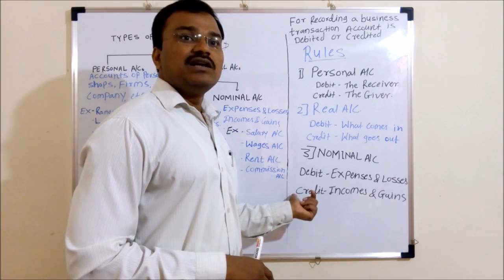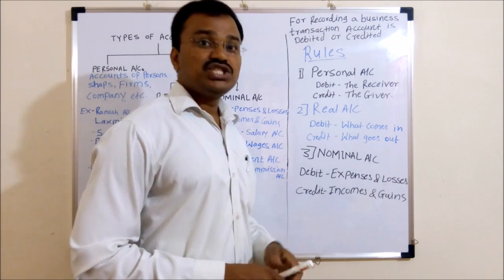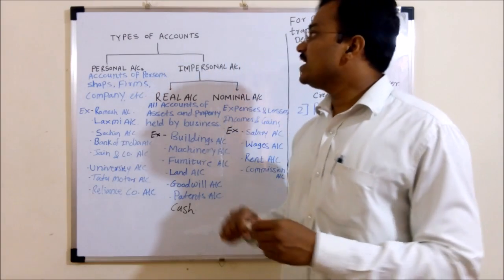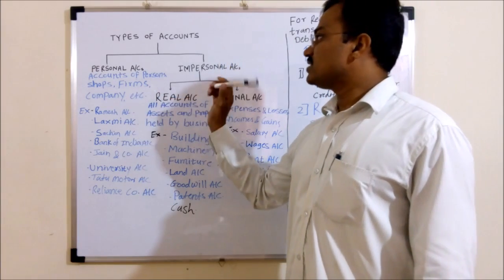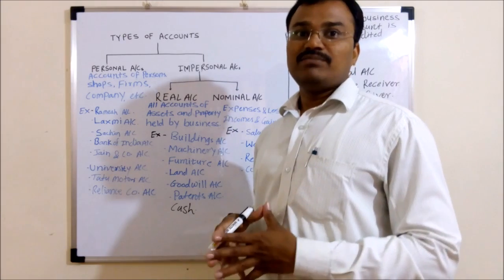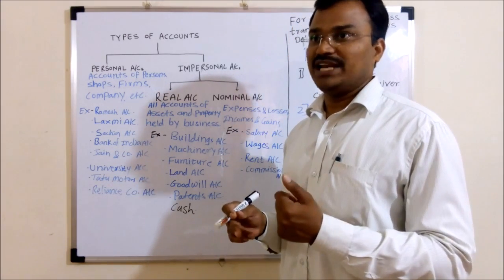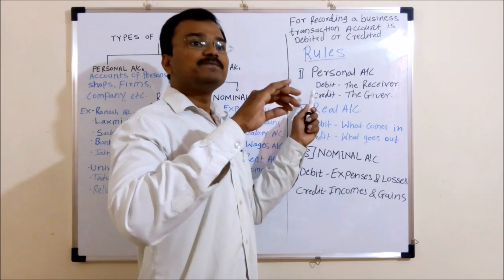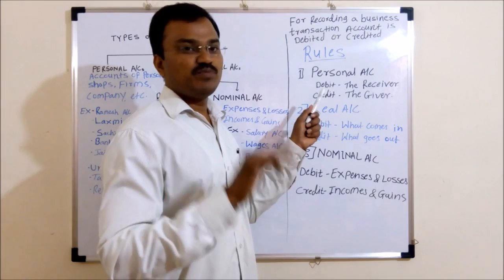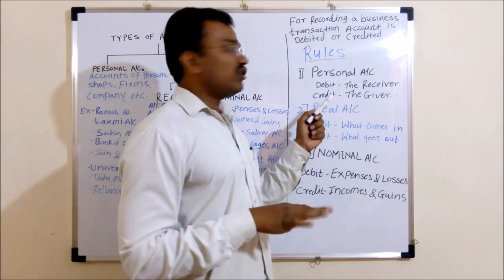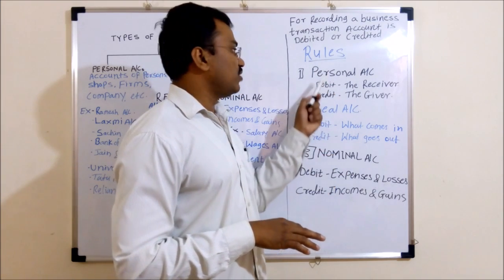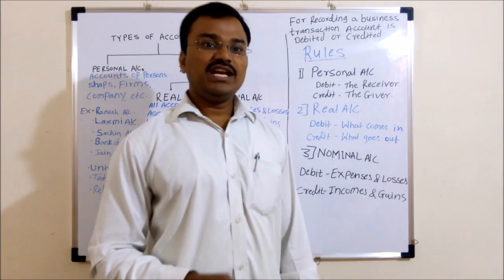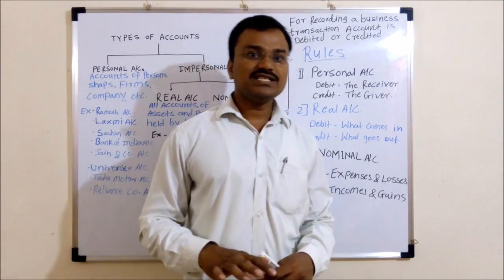These rules are considered the golden rules of accounting. Without knowing these rules, you cannot record any business transaction in the books of account. In this video, we learnt the types of account — mainly two types, personal and impersonal, but in simple terms three types: personal, real, and nominal. The rules are: for personal account, debit the receiver and credit the giver; for real account, debit what comes in and credit what goes out; and for nominal account, debit expenses and losses and credit incomes and gains.